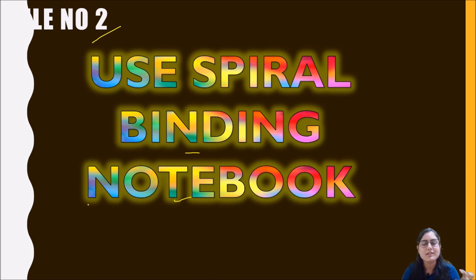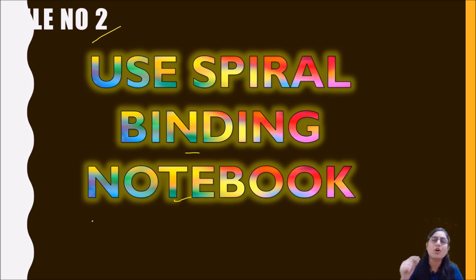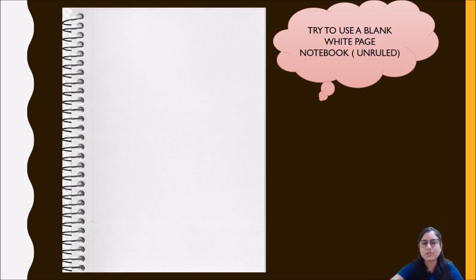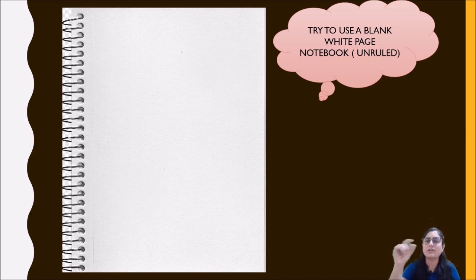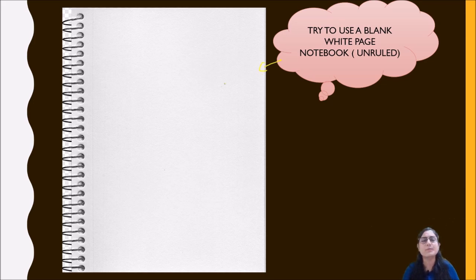This is a common mistake — when you are writing notes in a ruled notebook, the lines create an obligation and make it difficult to create diagrams. We are going to use blank white page notebooks which are unruled. If you make notes in such copies, then the notes will be very quick, very short, and simple.